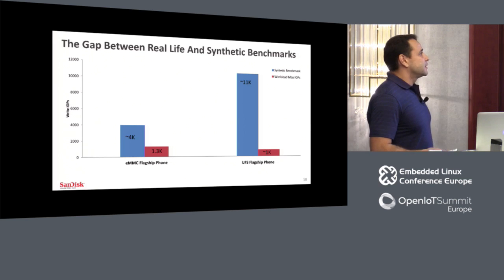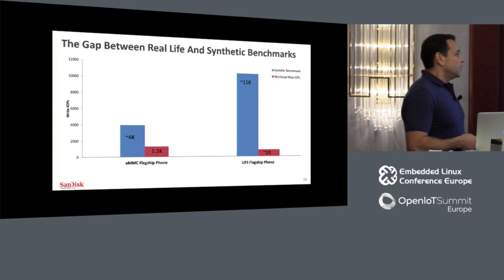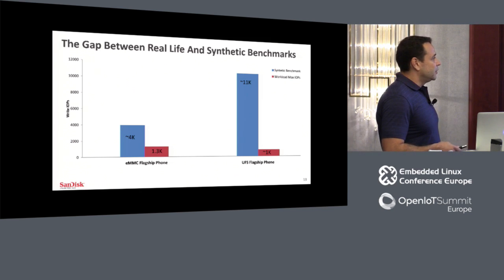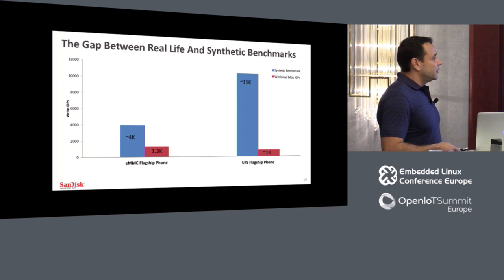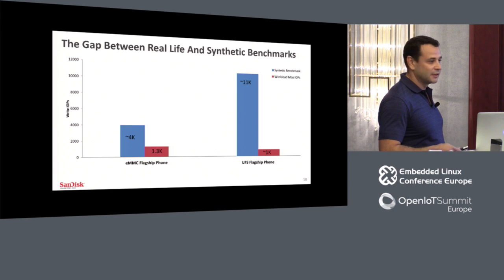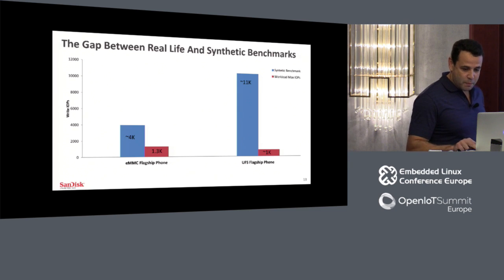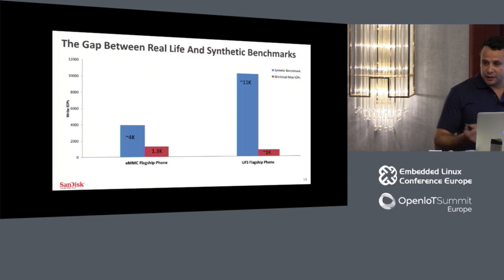When you compare real numbers to synthetic benchmarks, the difference is huge. When you run a synthetic benchmark like Android Bench, you can get on an embedded MMC device on a flagship phone around 4K IOPS random write. On a real use case, you saw around 1.5K IOPS. On UFS it's much faster — on synthetic you get 11K, but on a real use case you still see around 1K IOPS. It's very hard to achieve more by running real user activity.